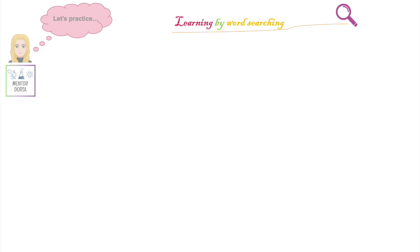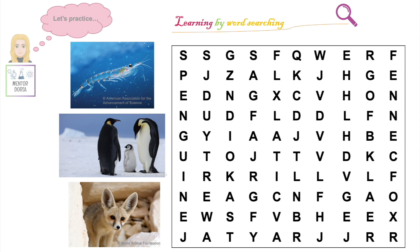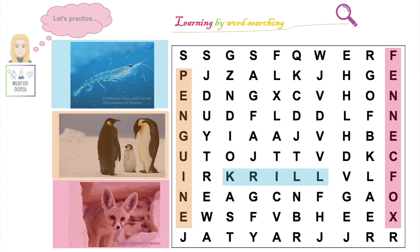Our final activity today will be this learning by word searching. Here we have three pictures of animals we have talked about today. In this word search we have the names of these three animals. What I would like you to do is try and find the names of the animals in the word search. The words might be going up or down, left or right or diagonally across. Feel free to pause this video so you have time to do this. Here we have the answers: this was a picture of a krill and the word could be found here. These are penguins and the word could be found here. And finally we have the fennec fox which could be found here.